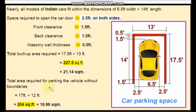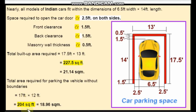Total area required for parking of the vehicle without boundary walls — if you don't want to provide a boundary wall or garage, the area required is 17 feet by 12 feet, that is 17 feet length and 12 feet width, equal to 204 square feet.